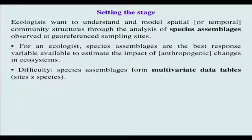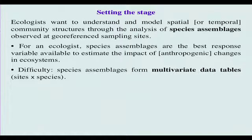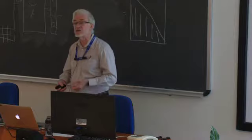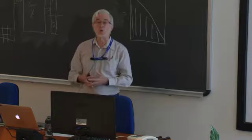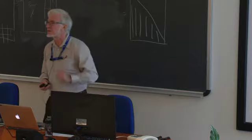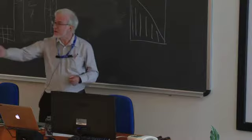It's because ecologists firmly believe that species assemblages are the best response variable available to us to estimate the impact of changes in the ecosystem, especially in modern times where the impact is produced by man. In the old days, a government agency would ask an ecologist to come along, walk around an area, and say things like 'maybe there was some change' or 'there is a beaver — he must be responsible.' Well, we don't do that anymore.